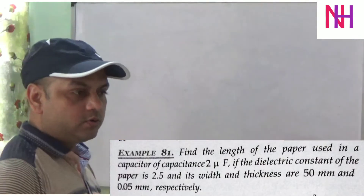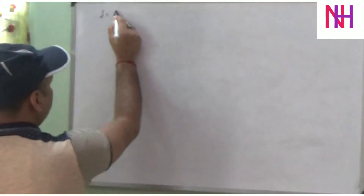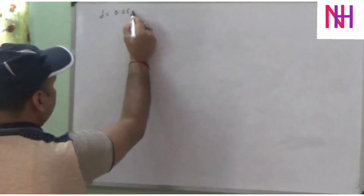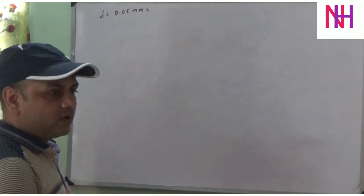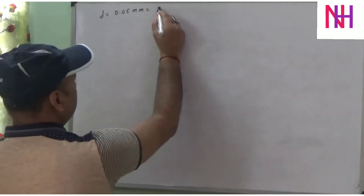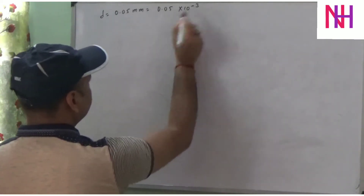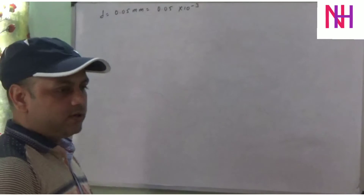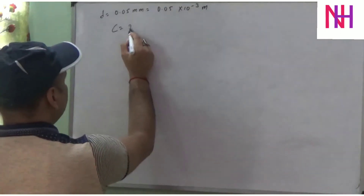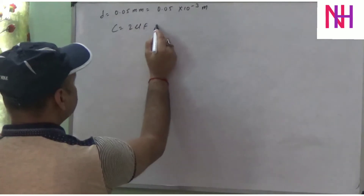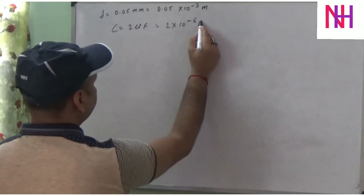Given the information, we can write: d (thickness) = 0.05 mm = 0.05 × 10⁻³ m. Capacitance C = 2 microfarad = 2 × 10⁻⁶ farad.